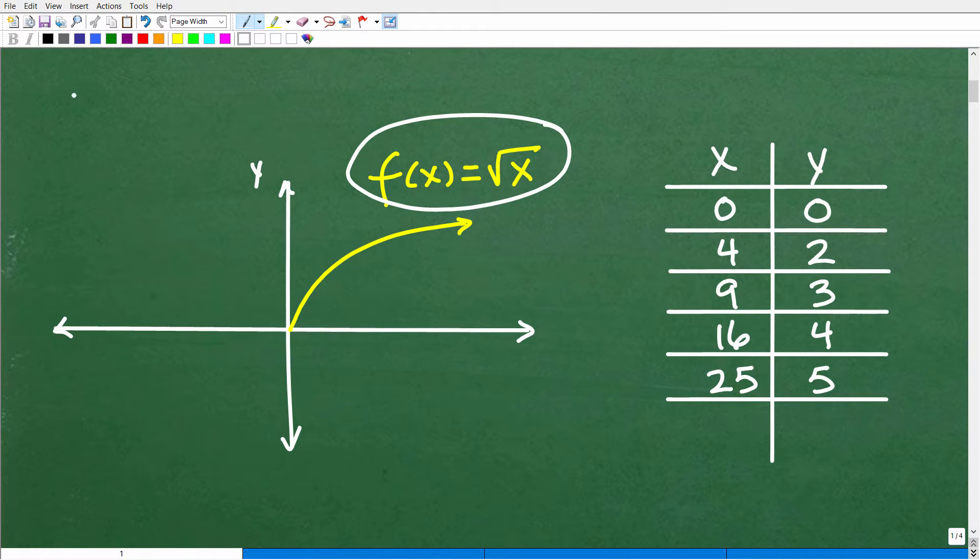So again, anytime you're studying any function in algebra, you want to know the basic graph. So for example, quadratic equations, a basic graph is a parabola. Linear equations, a basic graph is a line. Linear equations, and on and on. So here, with the square root of x, we want to know the basic graph, and you're looking at it right here. So here's x, here's y. So it starts at the origin, very specifically, 0, 0. And then it's going to have this shape.